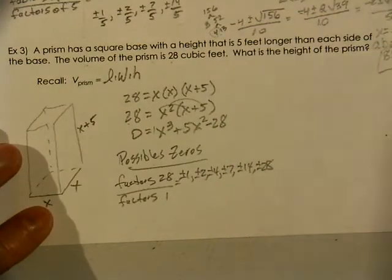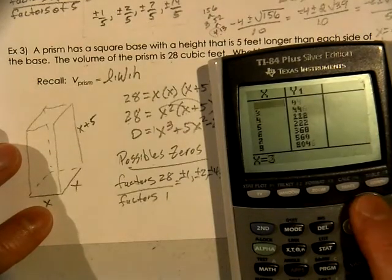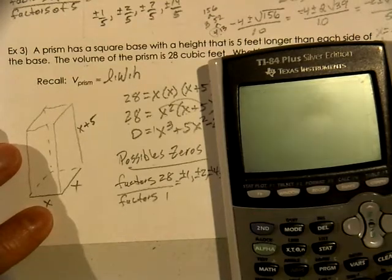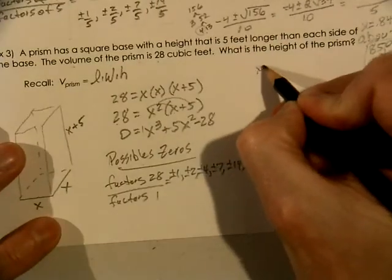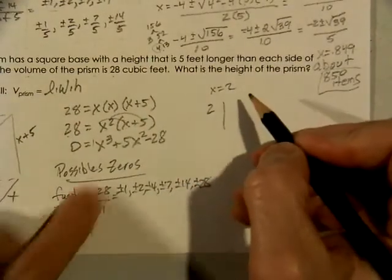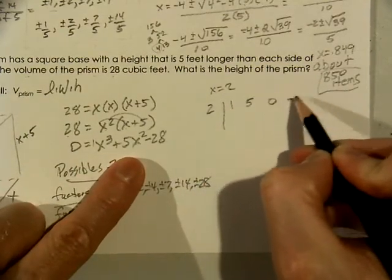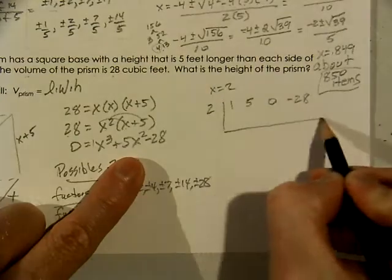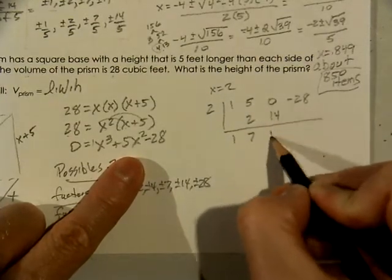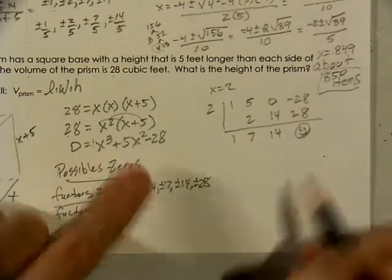Let's see what that looks like. So in our table we can see that when x is 2 is a good number to use, it's a pretty common one but when x equals 2 we saw that that gave us a zero. So we have 1, 5, 0, negative 28.